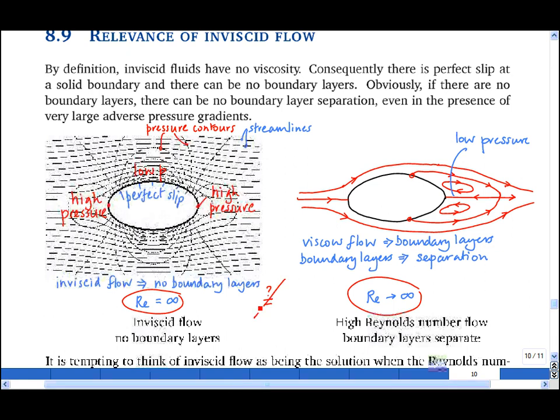But this is absolutely not the case because of the presence of boundary layers, which cannot exist in an inviscid flow. So why do we bother with inviscid flow? Well, firstly, it is quite a good approximation for the flow when the boundary layers are thin and have not separated.